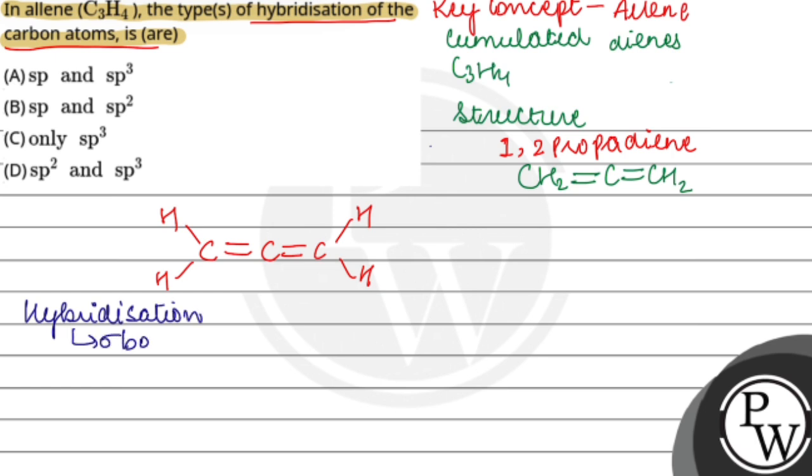We check sigma bonds for each carbon: first carbon, second carbon, and third carbon. The second carbon is sp because it has two sigma bonds, and the third carbon is sp2.